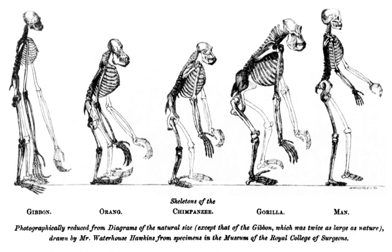Addendum: a succinct history of the controversy respecting the cerebral structure of man and the apes, p113-118, set in a smaller font. Chapter 3: On some fossil remains of man, p119-159. A Neanderthal skull cap and other bones had been found, and various remains of early Homo sapiens. Huxley compares these remains with existing human races.